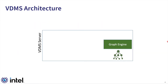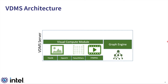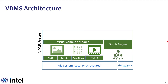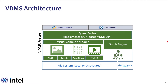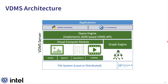For the architecture, we have a graph engine as the metadata engine where we store all the metadata information associated with the visual objects. We have a visual compute module that is in charge of running any pre-processing operations that we need, and we layer on top of a file system — either a local or distributed one. We also have support for persistent memory, and the main implementation is a query engine that implements a JSON-based API that hides all the complexity of dealing with these types of data behind a single interface. We provide Python and C++ connectors that applications can use to connect to the server in a client-server architecture.